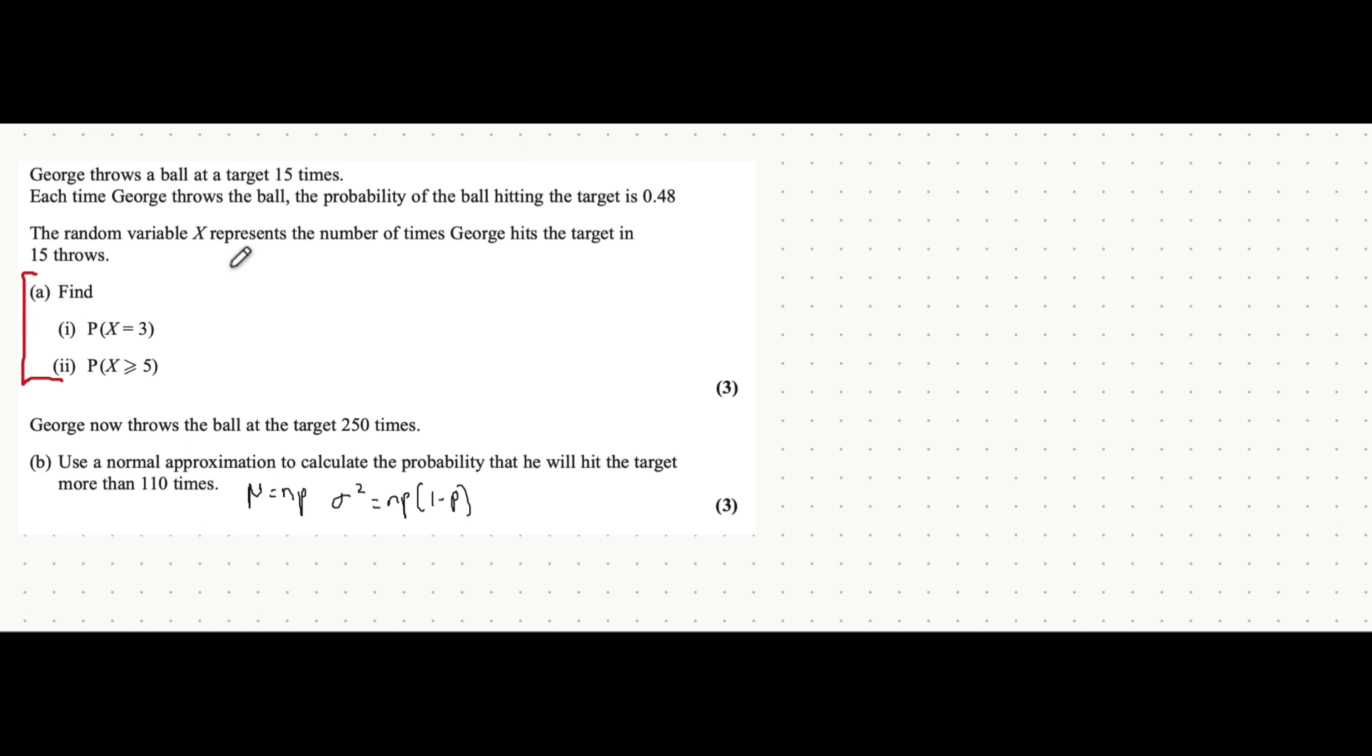But in the binomial, when we use it is where there's two outcomes, either one or the other. So here, when George throws a ball, he's either going to hit the target or he's not going to hit the target. That probability of him hitting the target is our value of P. N is the sample size, which is how many times he's going to carry out the experiment, which is 15 times.